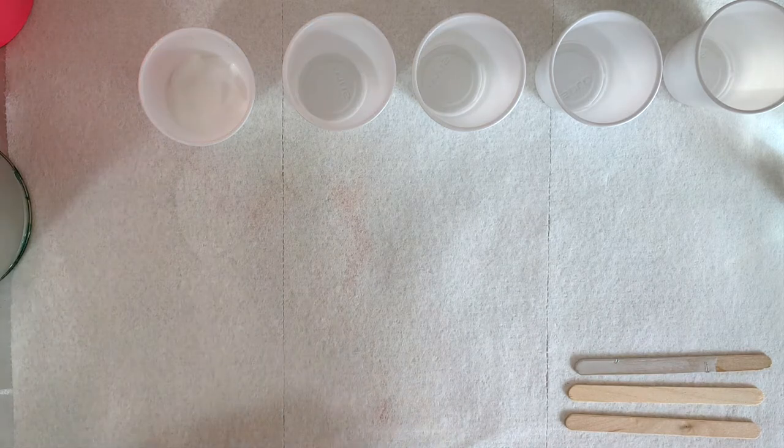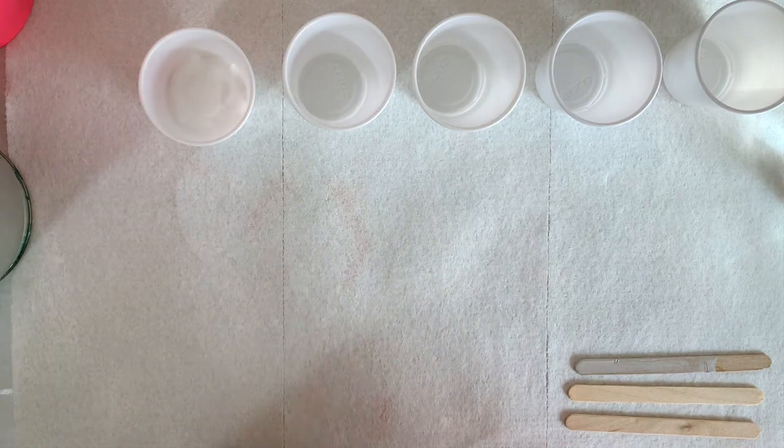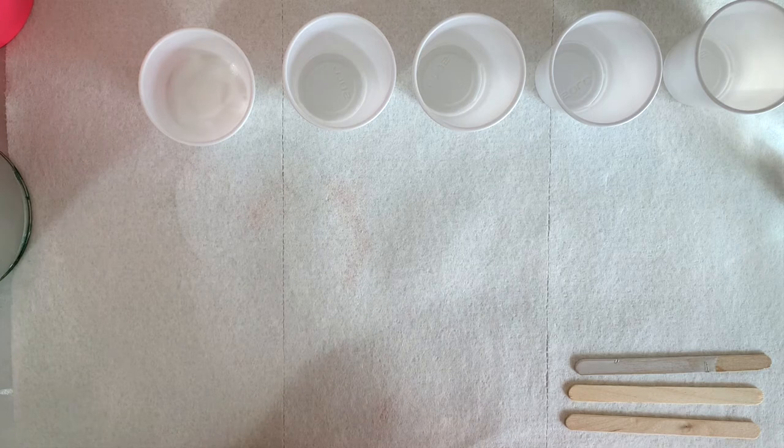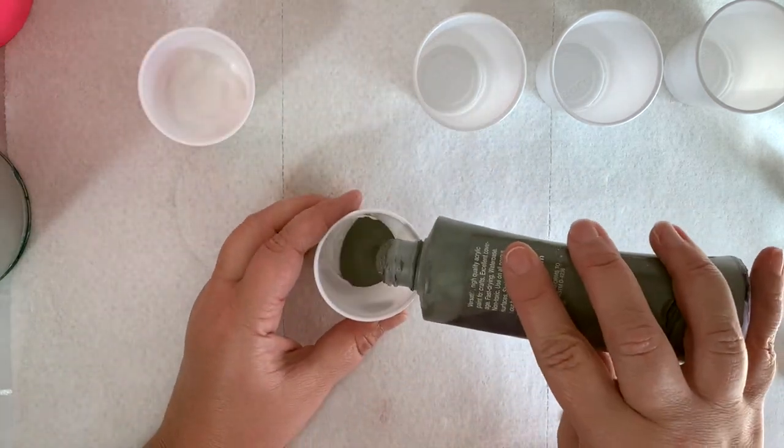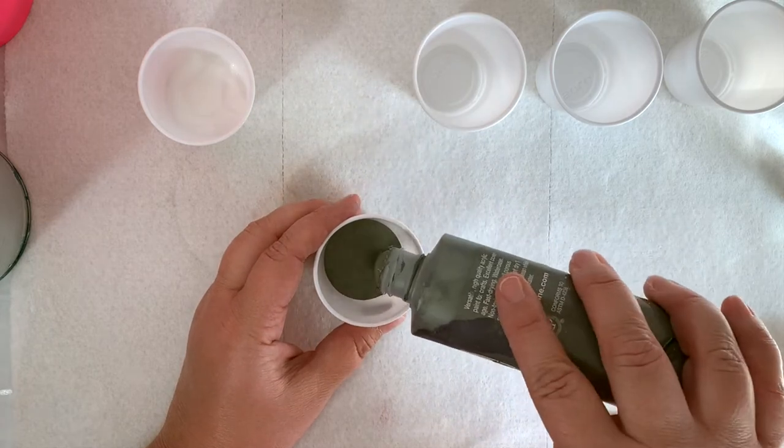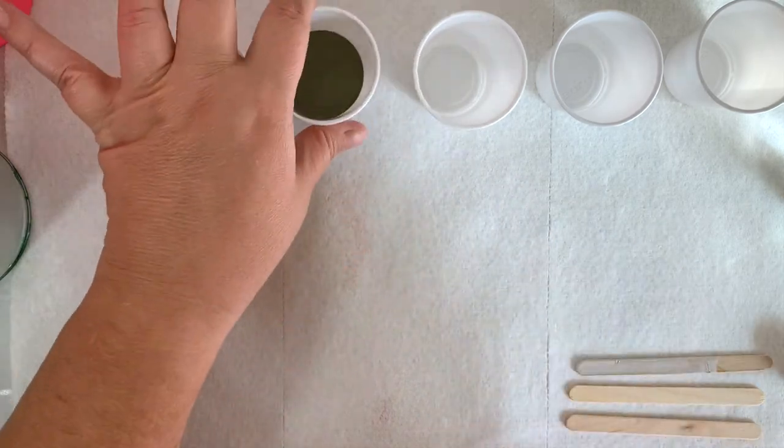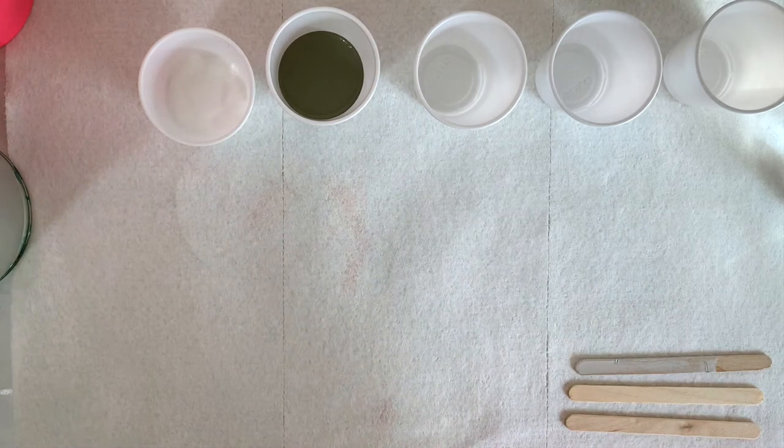The important thing is the freezer paper because that's going to allow you to peel the paint off once it has dried. The first thing I'm going to do is you'll see me take the colors and pour them into little cups. We're going to use white, gray, a dark blue, and a light blue.